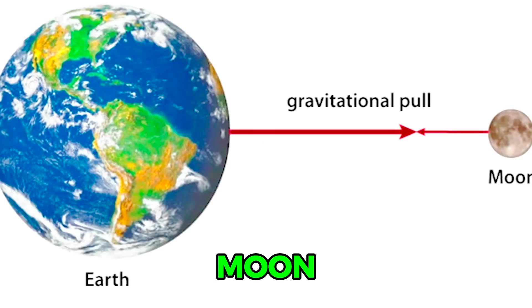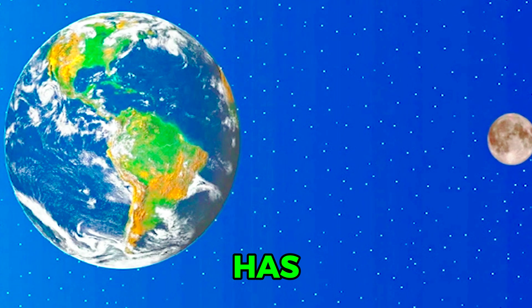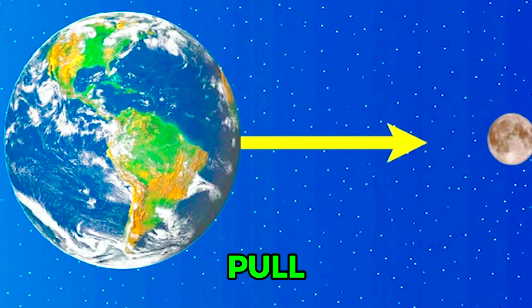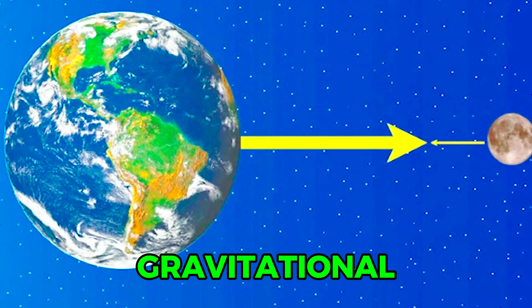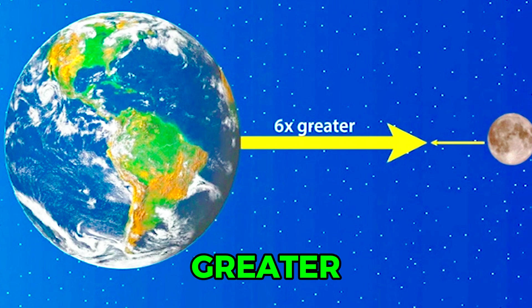Both the Earth and Moon exert gravitational pulls on each other. The Earth has a greater gravitational pull on objects because it has a larger mass than the Moon. Earth's gravitational pull is about six times greater than the Moon's gravitational pull.